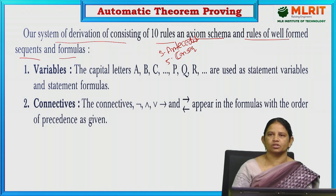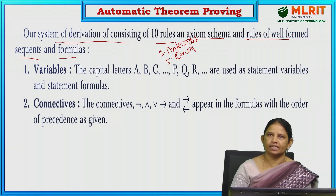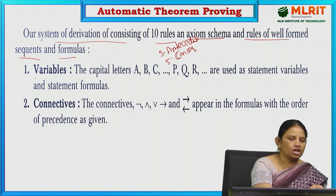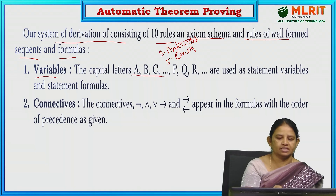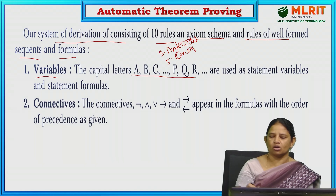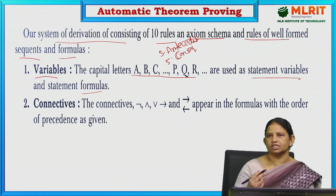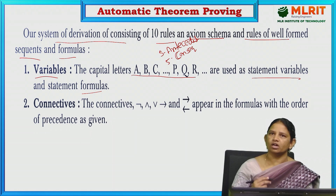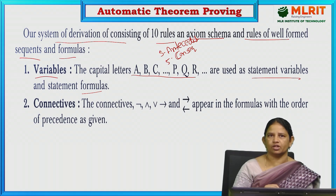First of all let us discuss about some basic terminology required for automatic theorem proving. First one is variables. The capital letters — A, B, C, D, P, Q, or whatever they may be — all capital letters are the statement variables, which are called statement formulas. We are going to use these variables in automatic theorem proving: A, B, C, D, and so on, up to all capital letters in the English language.